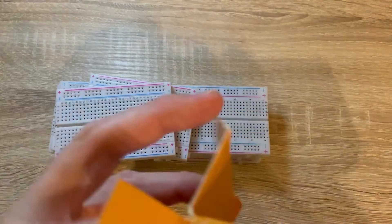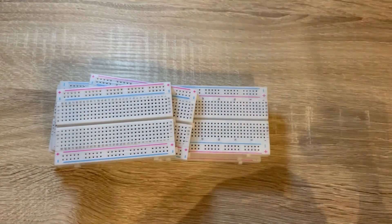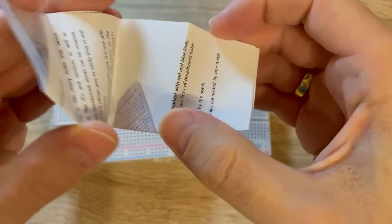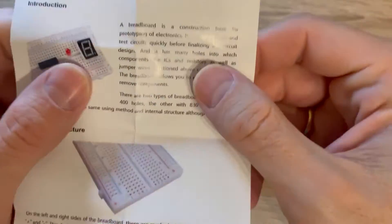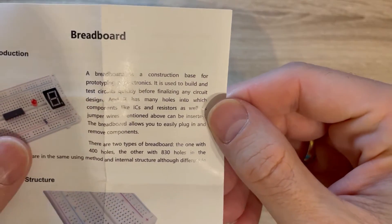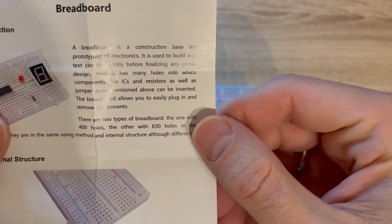And I see there were also some instructions in the package. Now it gets interesting. What does it read? 'Breadboard is a construction base for prototyping electronics. It is used to build and test circuits quickly before finalizing any circuit design, and it has many holes into which components like ICs and resistors as